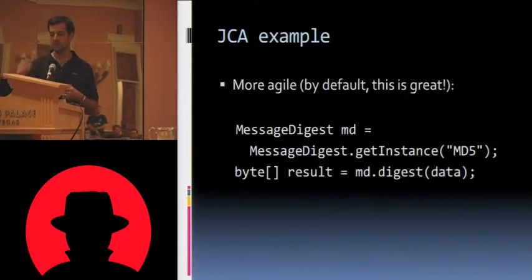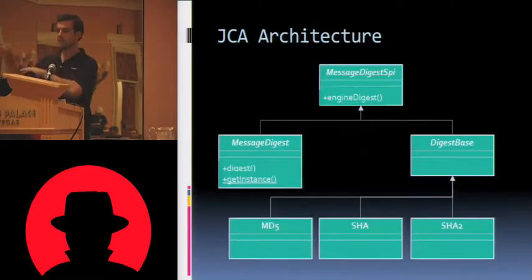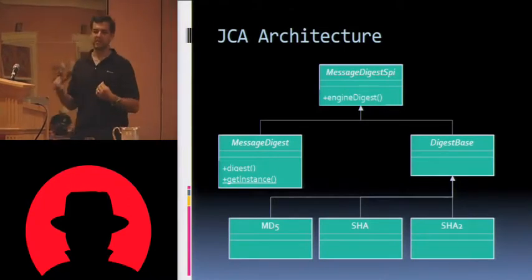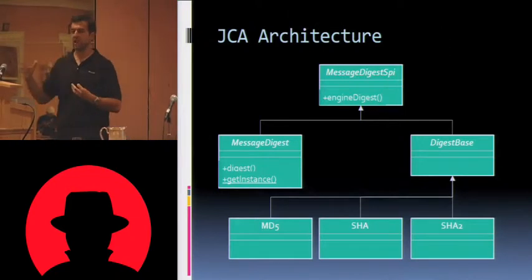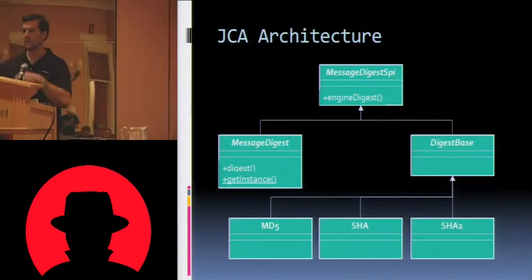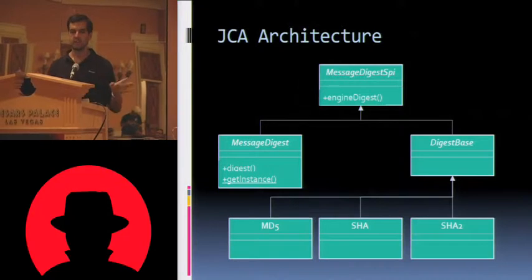One thing you may notice: when you say MessageDigest.getInstance, you get back a MessageDigest object. But from this chart, these implementations at the bottom don't actually derive from MessageDigest — so that appears to be impossible. What happens under the covers is that the MessageDigest class wraps those in a delegate, so it's transparent. This is based on this particular provider. If you were writing your own, you could actually derive from MessageDigest. The only important thing is that it eventually gets up to MessageDigest SPI.